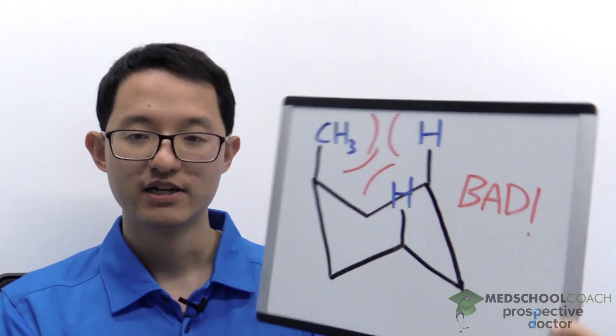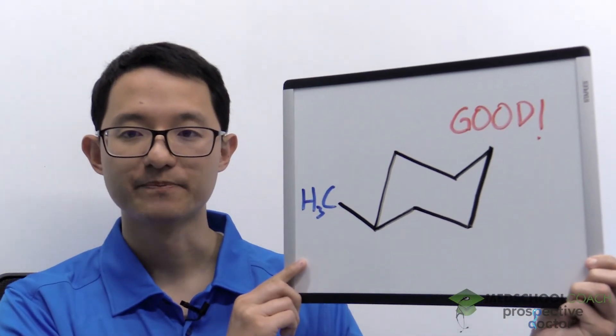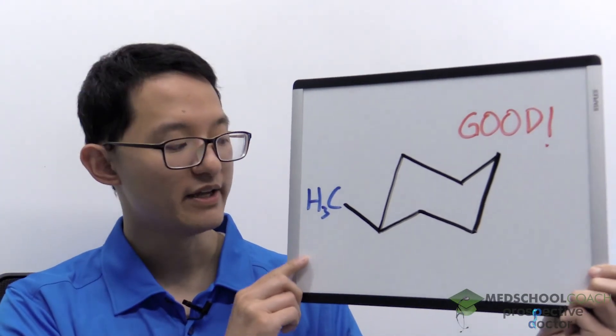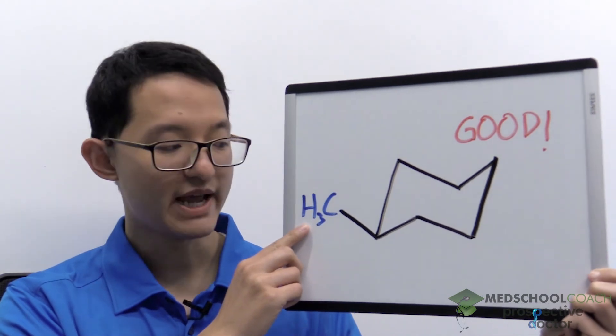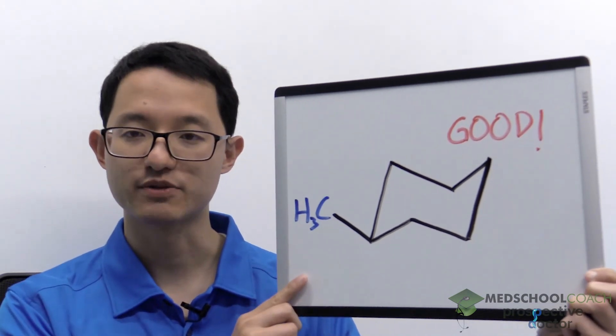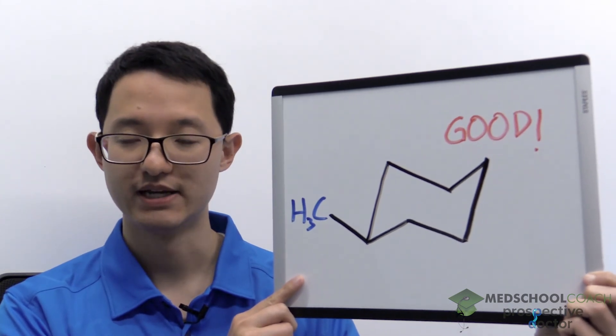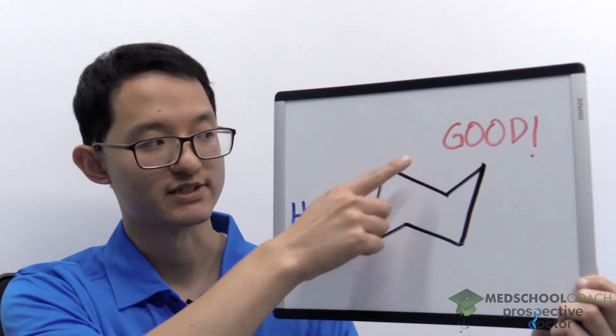So this is bad. What this means is anytime you have a large substituent, that large substituent needs to be in the equatorial position, as you can see on this board here. So again, we have the methyl group, but now it's in an equatorial position where it won't experience these 1,3-diaxial interactions. So this is good.